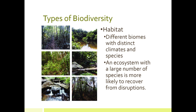The third type of biodiversity is habitat biodiversity — the variety of different biomes and habitat types. Ecosystems with high species diversity recover better from disturbances. When habitats are damaged and dominated by specialist species, those species may be permanently lost. A greater variety of species increases the likelihood of recovery and rebound.